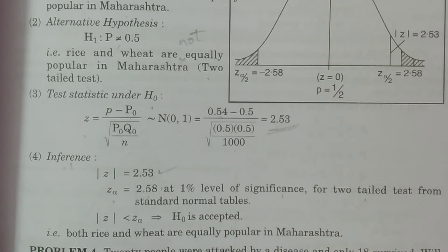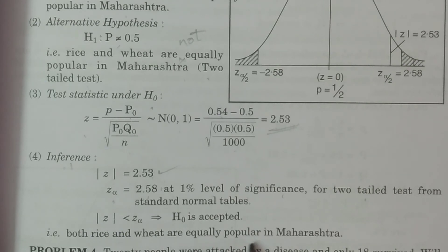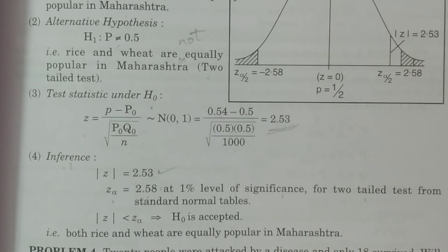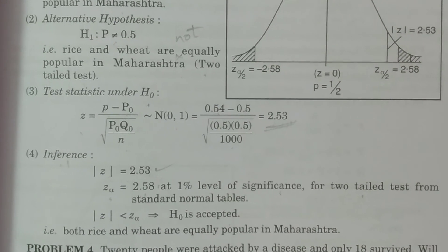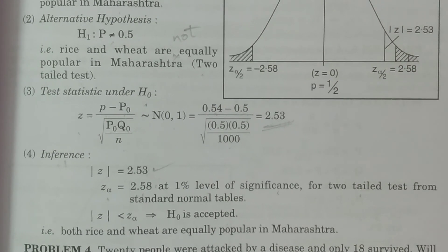Since H-naught is accepted, our conclusion is that rice and wheat are equally popular in the state of Maharashtra. Thank you very much.